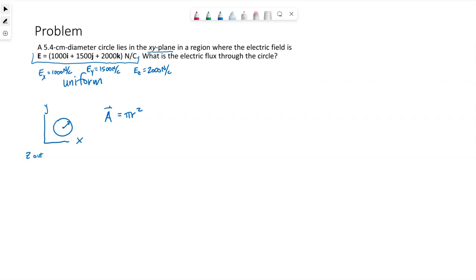The direction is normal to the surface. Because this circle is oriented in the xy plane, normal to that plane is the z direction. So this area vector is pi r squared in the k hat direction.